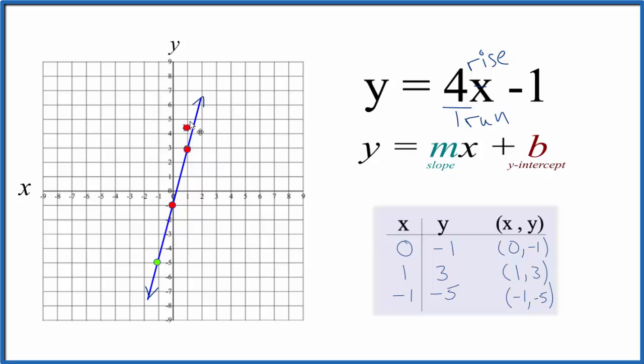Do it again. 1, 2, 3, 4 over 1. And that's on our line as well. And we could go in the opposite direction. We could go down 1, 2, 3, 4 over 1 to the left. So we did the first part correctly.